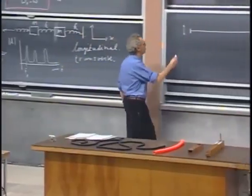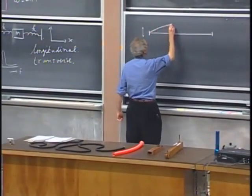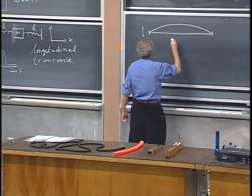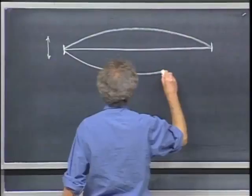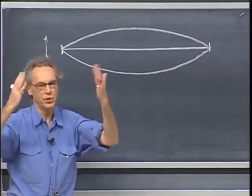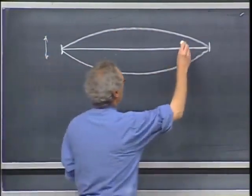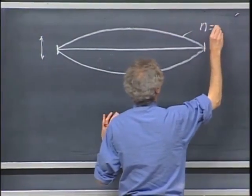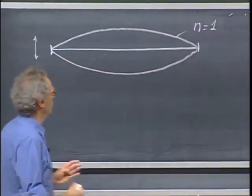And when I look at the string, and you will see that shortly, the string will oscillate like so. It will go up here and it will go down here. And all it will do is this. That's its first resonance. And I call this N equals one, often called the first harmonic.